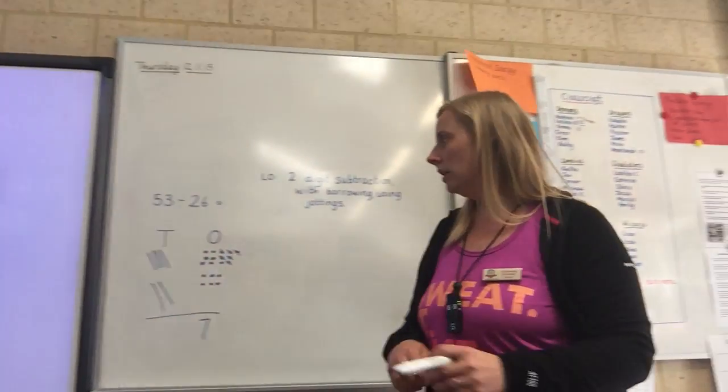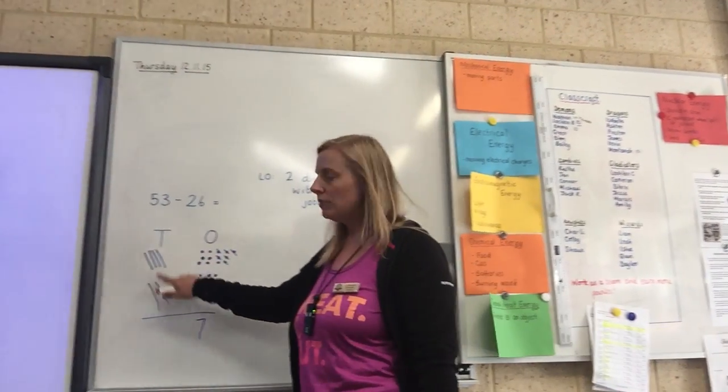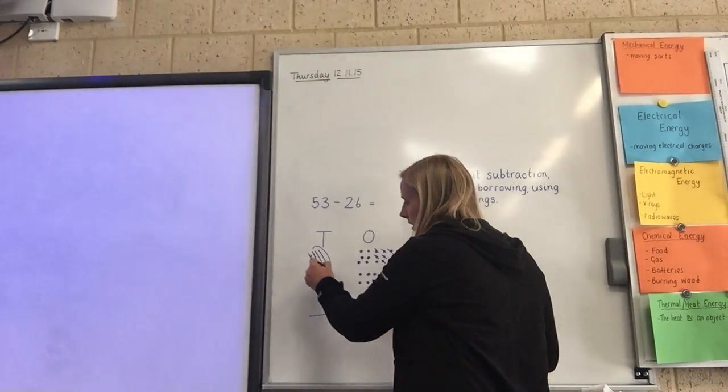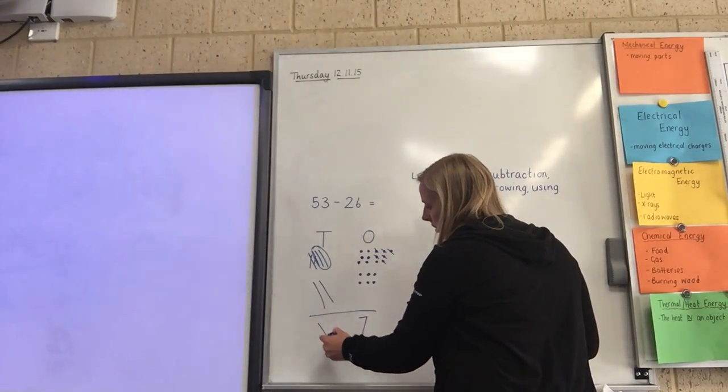Now we're going on for our tens column. We've got four tens rods, take away two tens rods. Take away the two rods and the circled ones we have left, we've got two rods left.